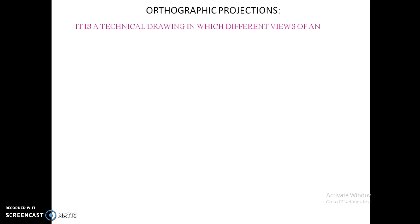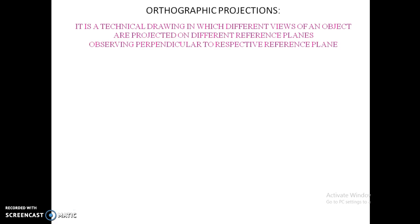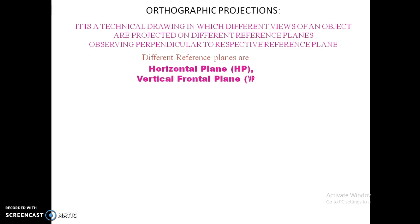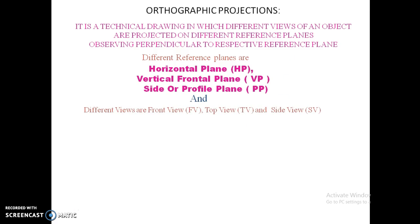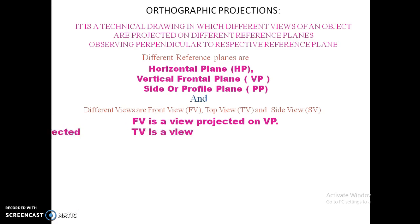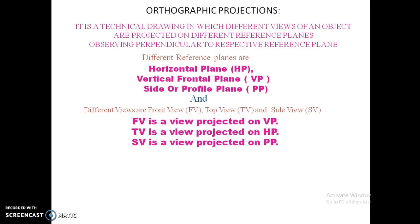What is orthographic projection? As you can see on the screen, it is a technical drawing in which different views of an object are projected on different reference planes, observed perpendicular to the respective reference plane. Different reference planes are the horizontal plane, vertical plane, and the profile plane. We have different views: the front view is projected on VP, the top view is projected on HP, and the side view is projected on the profile plane.